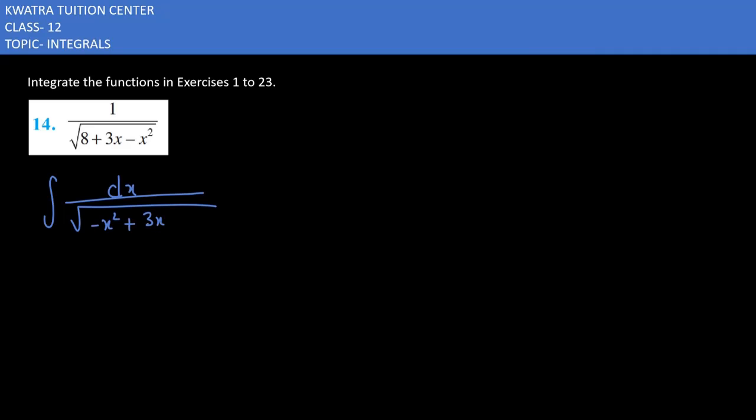Write minus x squared first, 3x second, then the number. Next, take the minus sign common from the denominator, leaving you with x squared minus 3x minus 8.